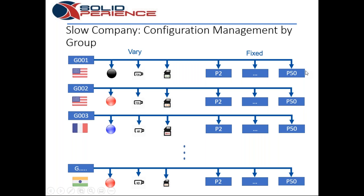Some components are going to be common across every configuration — the same screws throughout, supports, maybe the landing section isn't changing at all. So we've got fixed components that aren't changing. But then there are a whole bunch more orders, and we make another group — a red one with different memory capacity and different camera, and so on. You keep going and build all these assemblies, all these bills of materials — a spreadsheet for one, a spreadsheet for the other — and you start assigning these to a designer.